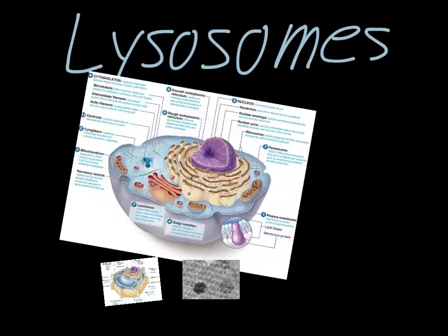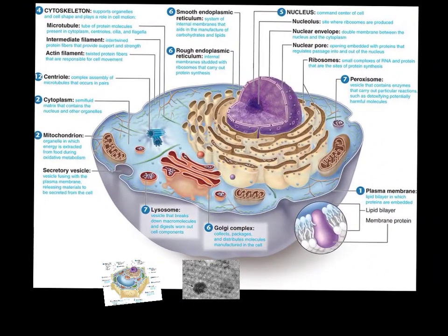If we take a look at an animal cell, we can begin by looking at where the lysosomes are located. You'll notice this is connected to another one of the organelles we were talking about. This lysosome is one of the vesicles that are leaving the Golgi apparatus. The Golgi apparatus produces a lot of things, and lysosomes are one of the things that it produces.